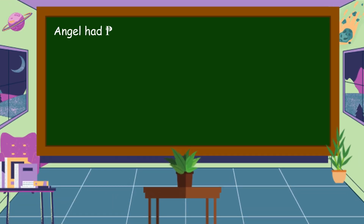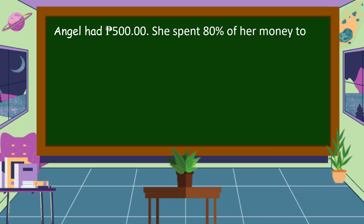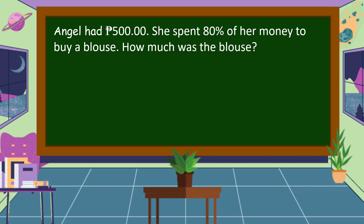Next problem: Angel had 500 pesos. She spent 80% of her money to buy a blouse. How much was the blouse? Let's analyze the problem. 500 pesos is the whole amount — this is our base.